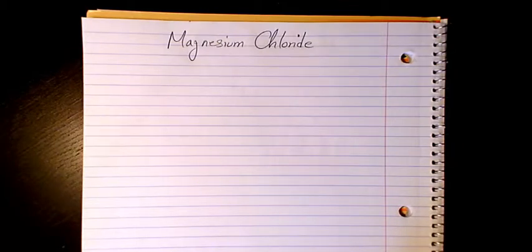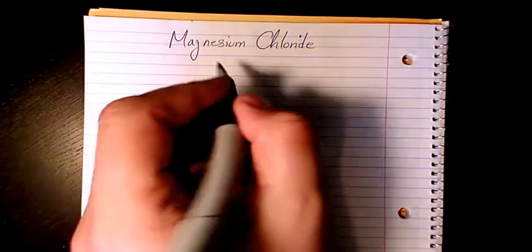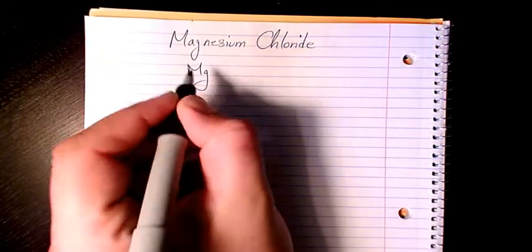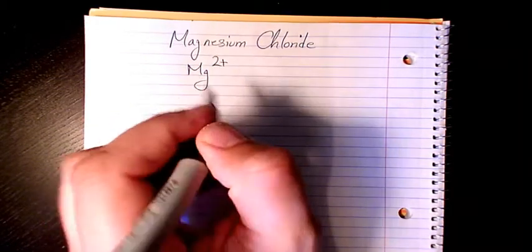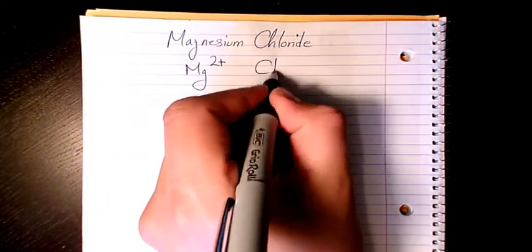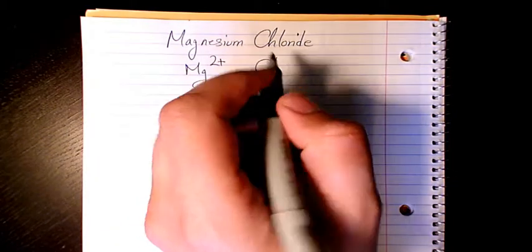So first of all we have magnesium. Magnesium is Mg, that belongs to group 2 so the charge is 2+. And chlorine chloride, which is from chlorine, the ion of chlorine, it belongs to halogen group and the charge is negative 1.